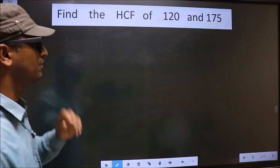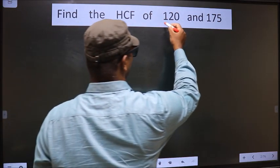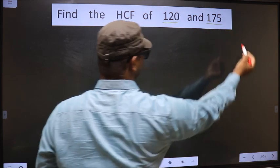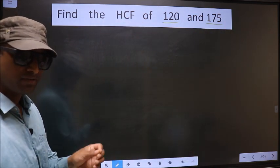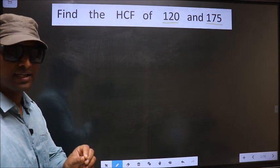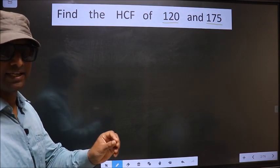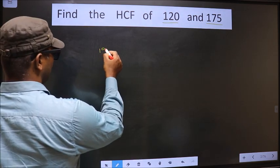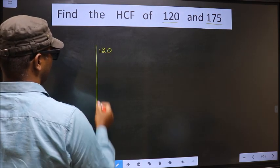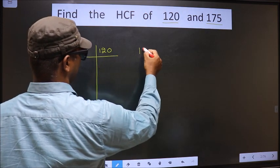Find the HCF of 120 and 175. To find the HCF, first we should do the prime factorization of each number separately. 120, 175.